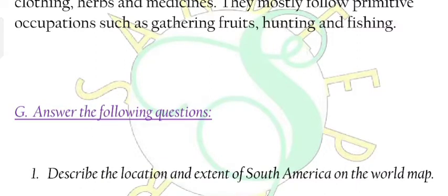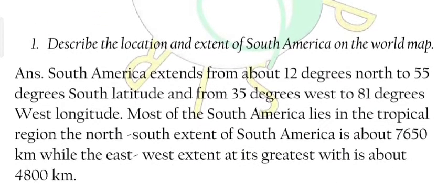Let's move on to Exercise G: Answer the following questions. Question 1: Describe the location and extent of South America on the world map. Answer: South America extends from about 12 degrees north to 55 degrees south latitude, and from 35 degrees west to 81 degrees west longitude. Most of South America lies in the tropical region.